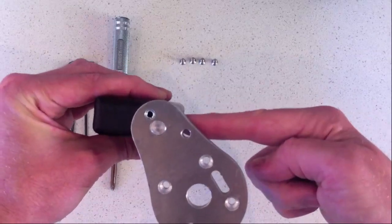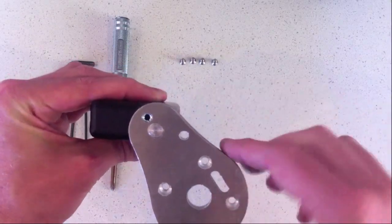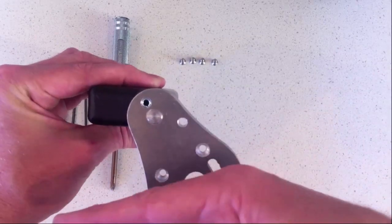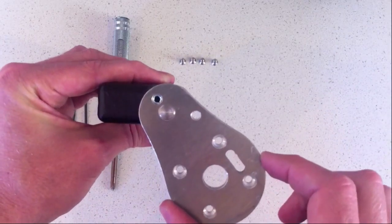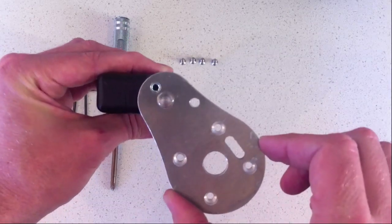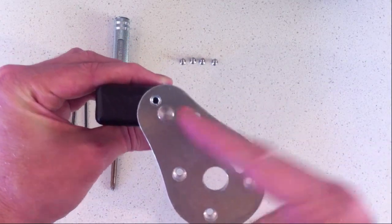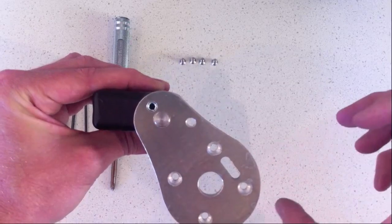So when we adjust the dead stop on this side, that adjusts how far the swing arm can rotate away from the tire. And the one below here adjusts how far up the swing arm can go. That adjusts how far the motor engages into the tire.